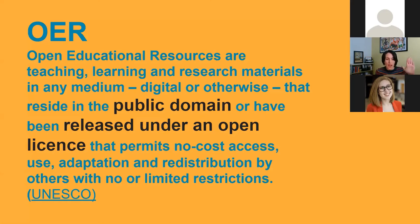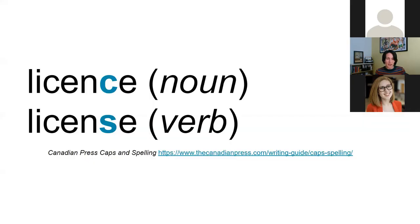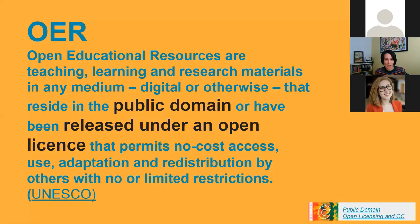A brief note: in Canadian English, 'licence' is spelled with a C as a noun and an S as a verb — so you may see spelling discrepancies between Canadian and US/international materials. Amanda has assigned an open licence to this presentation. If you wanted to use it, you wouldn't have to worry about asking permission or about an exception to infringement, because as the rights holder she's made it available with an open licence — and as long as you follow the terms of that licence, you're good to go.